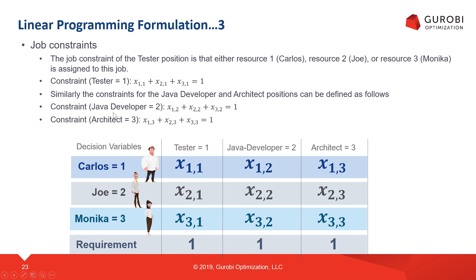Similarly, we define constraints for the Java developer job and the architect job. For Java developer (index 2), the second index is always 2: either Carlos, Joe, or Monica fills the job and we must choose one, giving X_12 + X_22 + X_32 = 1. For architect (constraint 3) we use the same idea. So the job constraints are three equality constraints, one for each job, ensuring exactly one resource is assigned to each job.